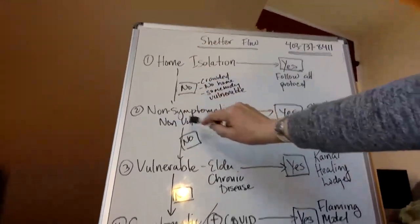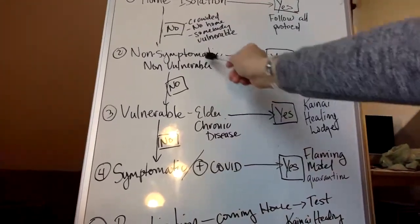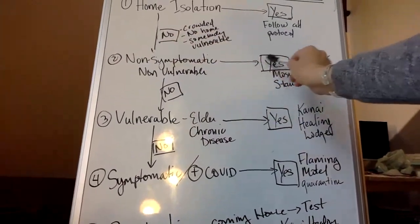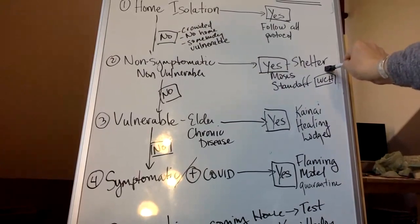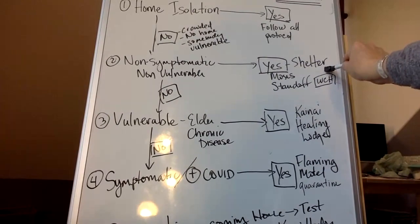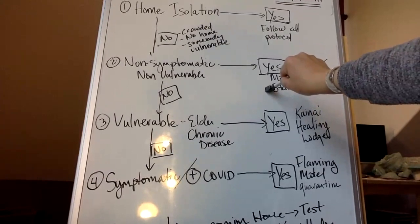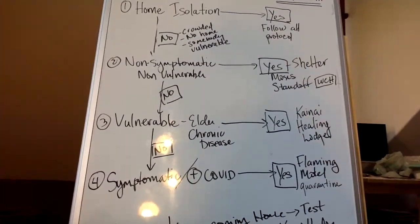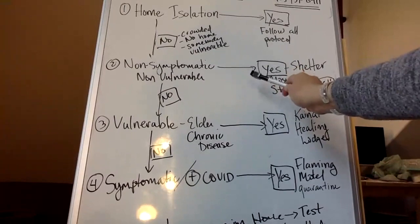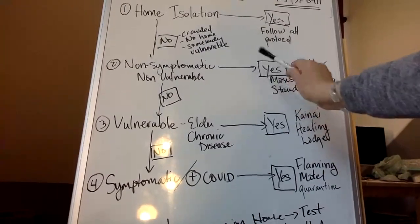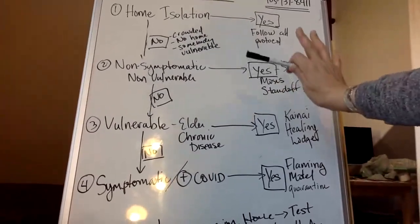So if they can't, then they go down to the non-symptomatic, non-vulnerable. That means that they're not having the COVID symptoms and they're not vulnerable. If they fall into those categories, then they go to the shelter. And our team is currently trying to establish these shelters for those who are non-symptomatic, non-vulnerable, and they're not sick. So we're looking at setting up a shelter in Standoff, which would probably be the Whitecalf Hall. And they're looking at Moses Lake Shelter, which is already up and running and we have people in there, and then they're looking at Gladstone Hall. So if they're in that shelter, great. We need to keep them safe there.